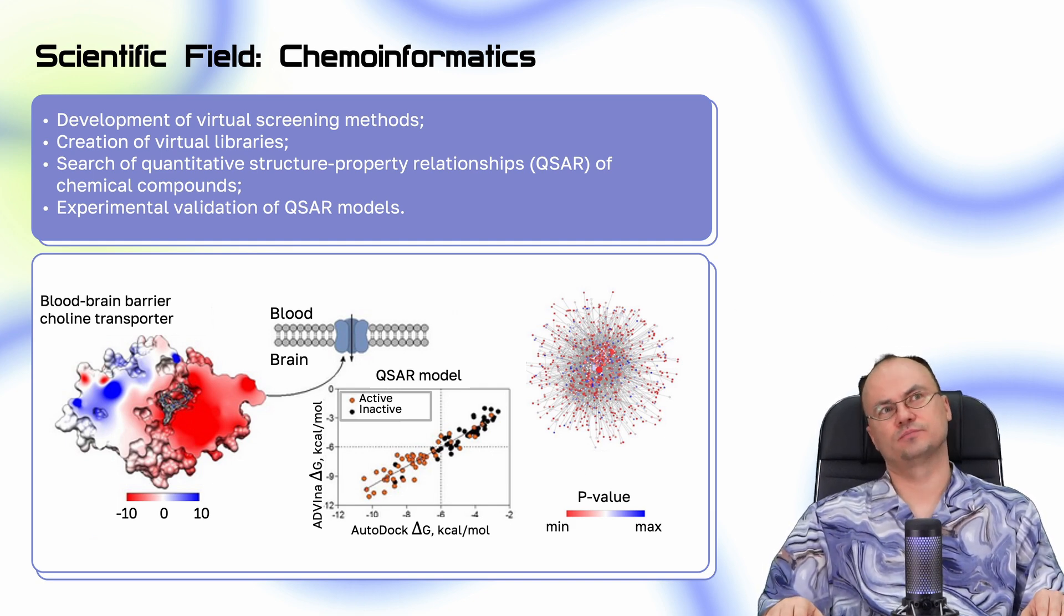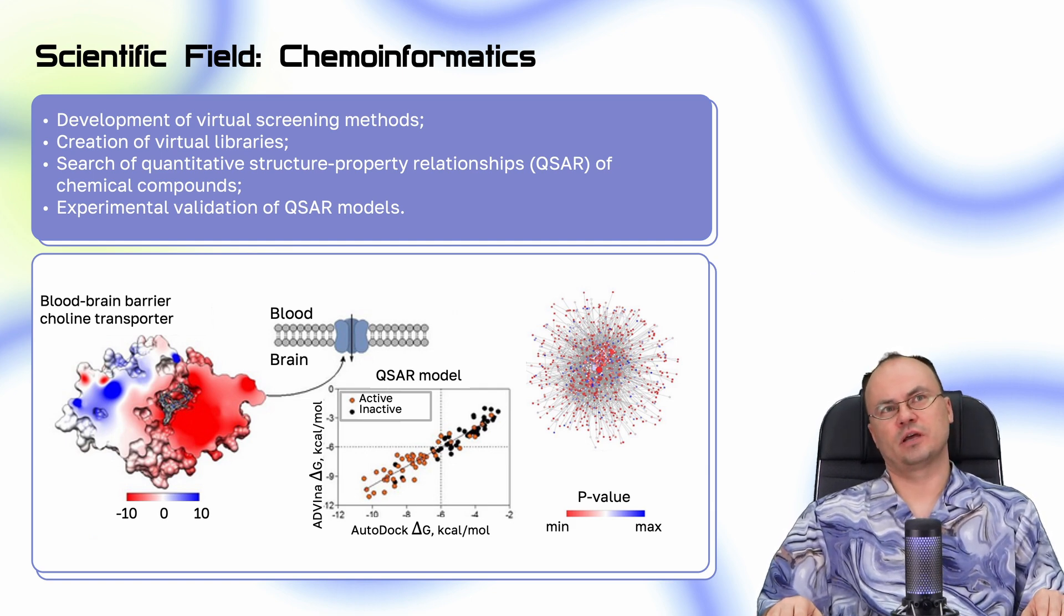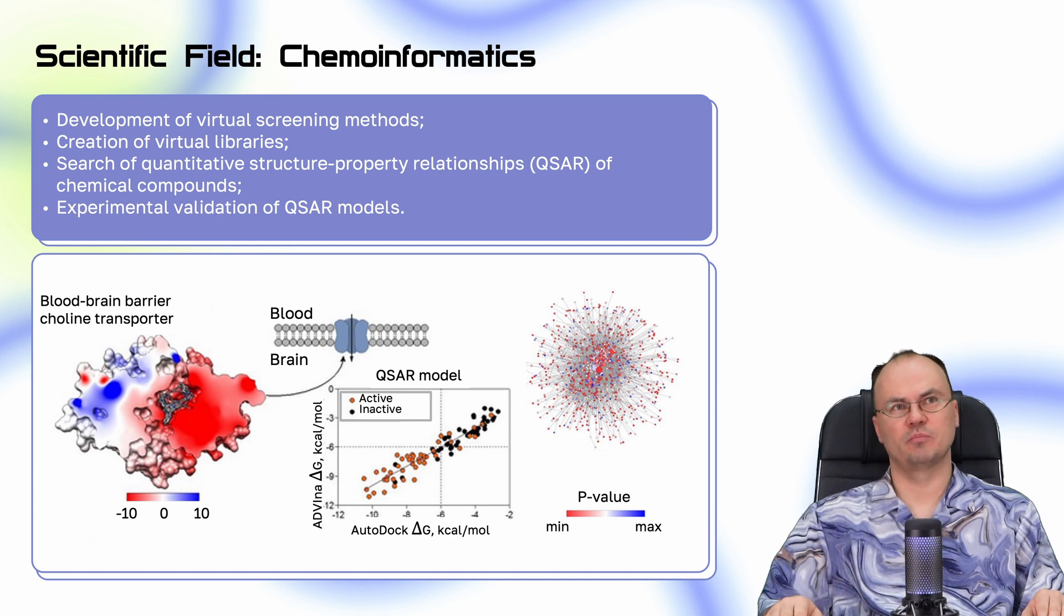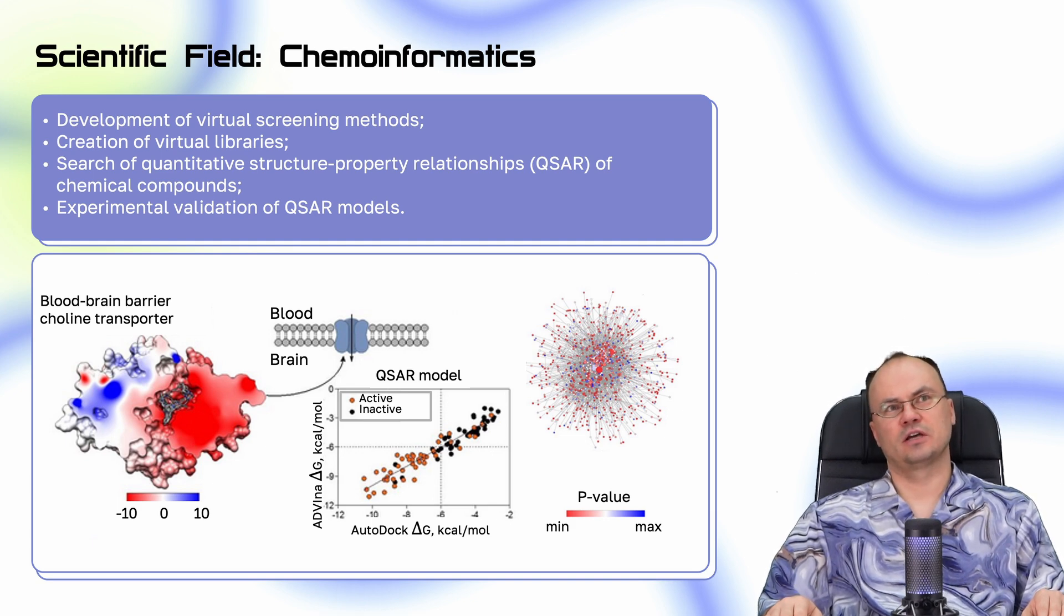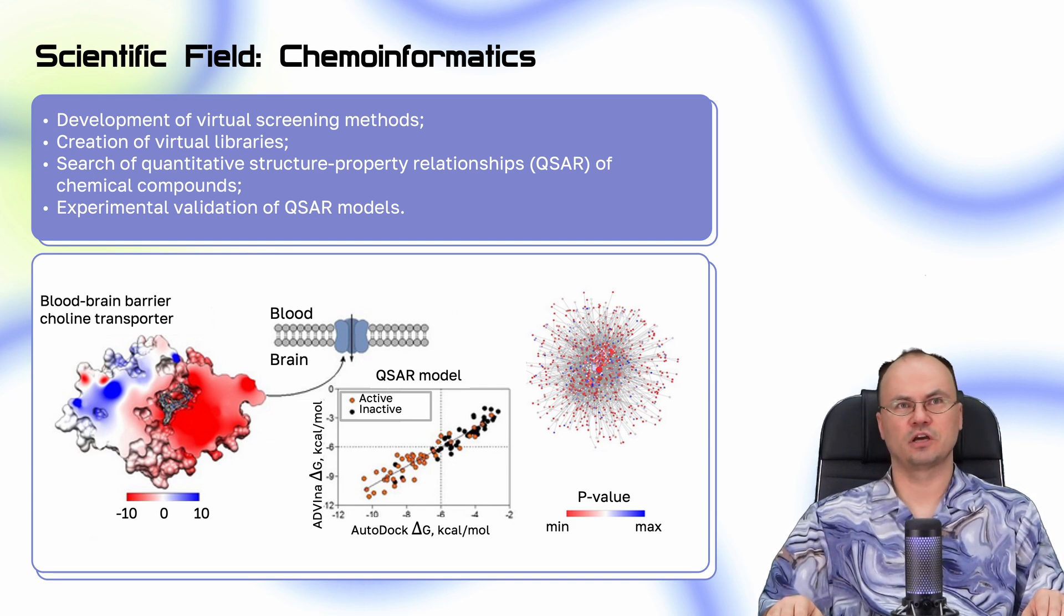First of all, I would like to say a couple of words about what we are doing in our Infochemistry Scientific Centre in terms of chemoinformatics projects. We are developing virtual screening techniques, creating virtual libraries, trying to develop quantitative structure-activity relationship models of different chemical substances, using important validation protocols, and we're trying to implement some experimental techniques to validate different chemoinformatics models.